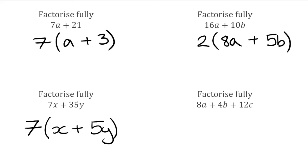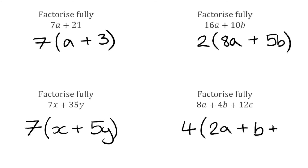For the final question in this section, we have three terms: 8a plus 4b plus 12c. Looking at the numbers, the highest common factor of 8, 4, and 12 is 4, so that goes on the outside of the bracket. Again, no common letter terms. Opening the bracket: 8a is 4 multiplied by 2a, plus 4b is 4 multiplied by b, plus 12c is 4 multiplied by 3c. So the answer is 4(2a + b + 3c).